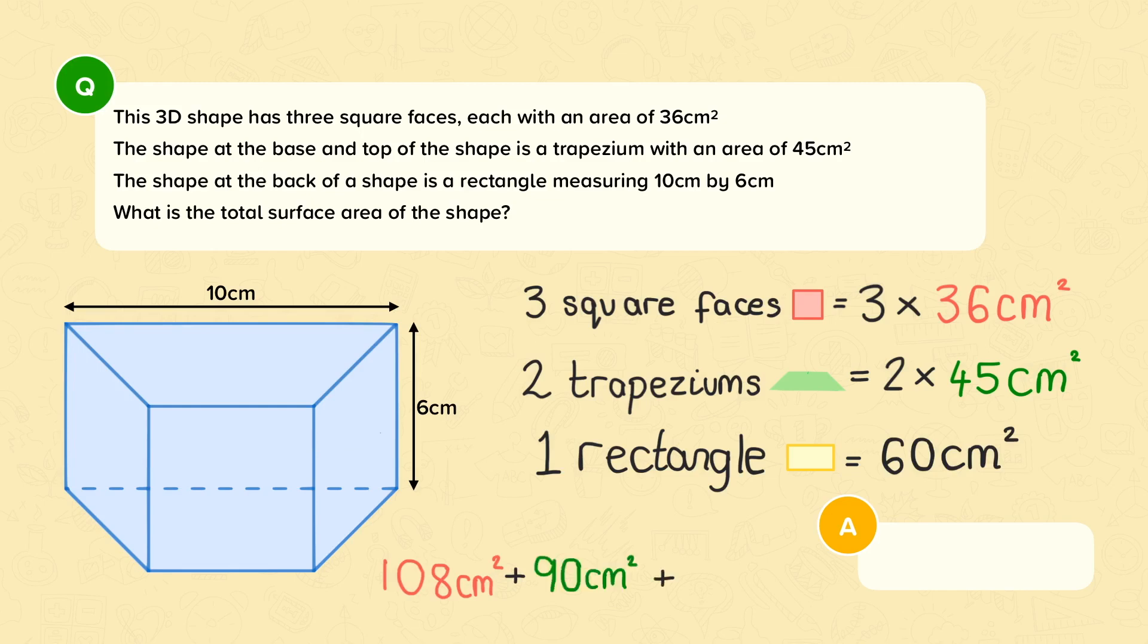And we need to add that all together with the 60cm squared. So the total surface area for this 3D shape is 258cm squared.